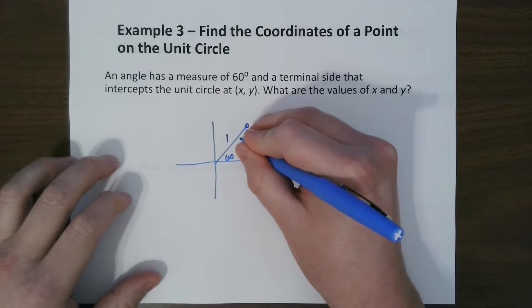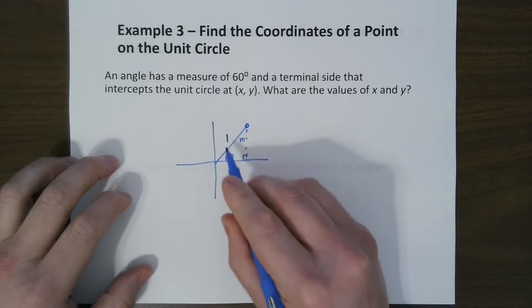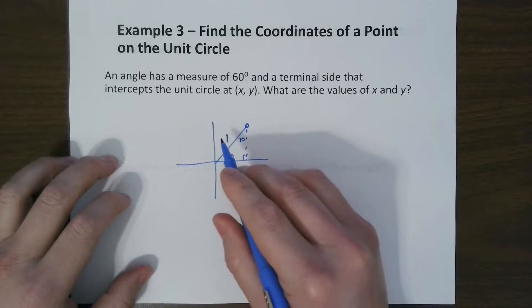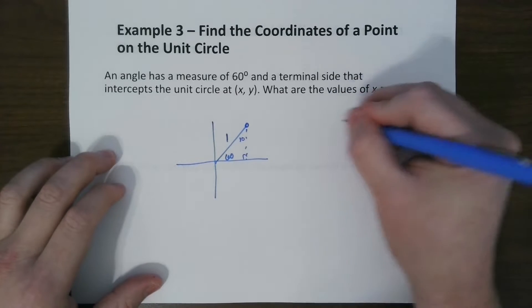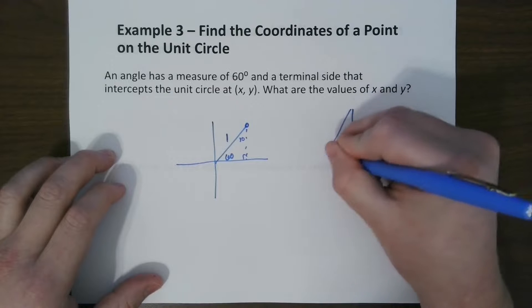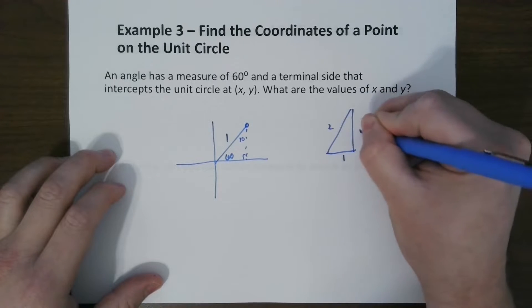Well, it's a 30, 60, 90 triangle. So we know that the pattern goes 1. Let me draw it on this side. The pattern goes 1, 2, radical 3 for this one.